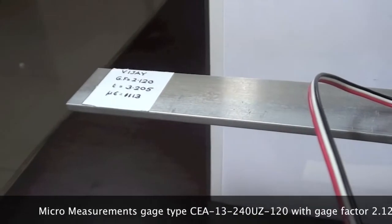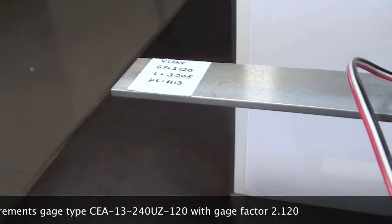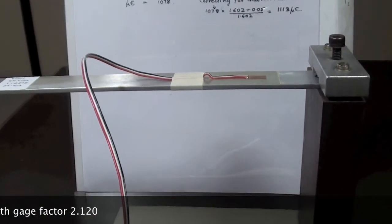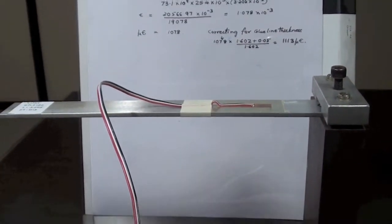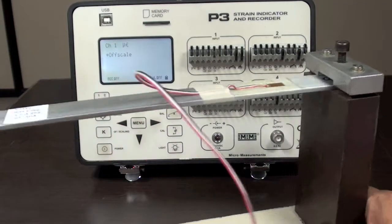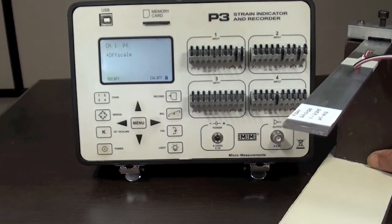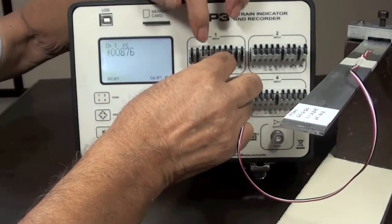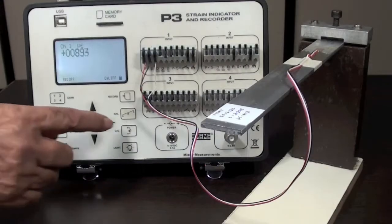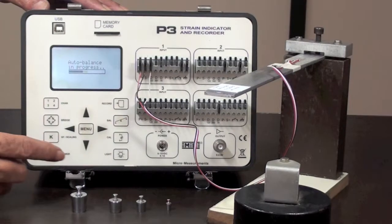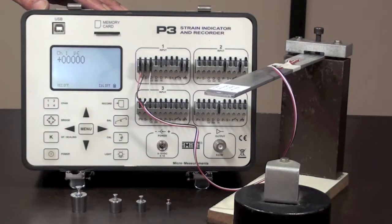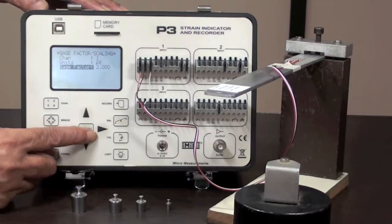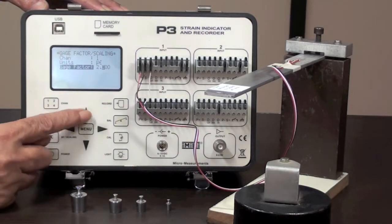A Micro-Measurements CEA type strain gauge is bonded to it and connected to a model P3 strain indicator. The gauge is balanced for no load condition and the gauge factor of the strain gauge 2.120 is set on the instrument.